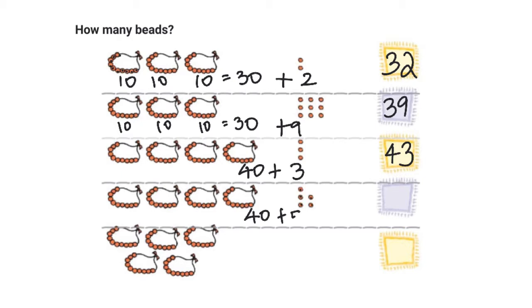In the next example, I have one, two, three, four necklaces, which is forty beads, plus one, two, three, four, five — five beads. So forty plus five gives me the number forty-five. In the next example, I have one, two, three, four, and five necklaces. Each necklace has ten beads, so I have fifty beads in total. I write fifty.